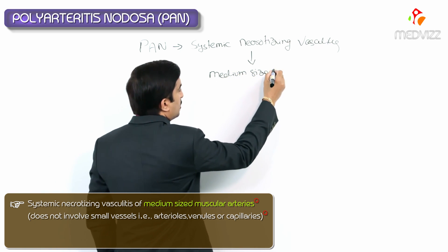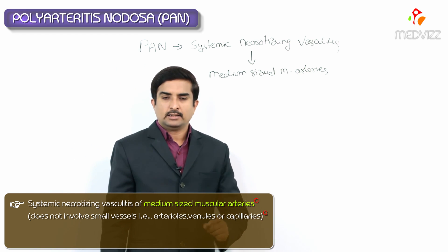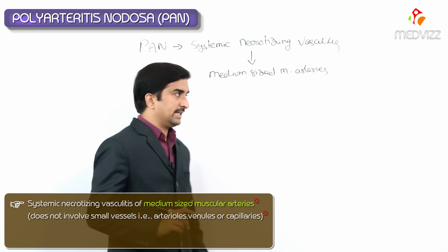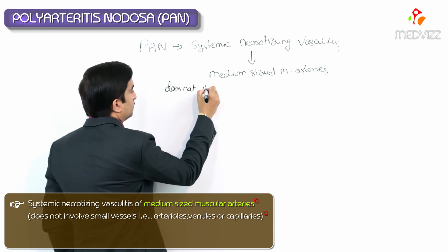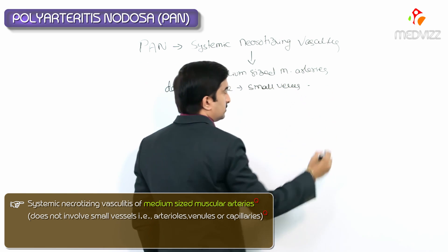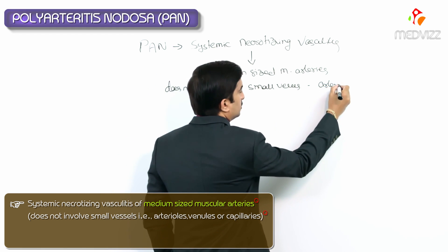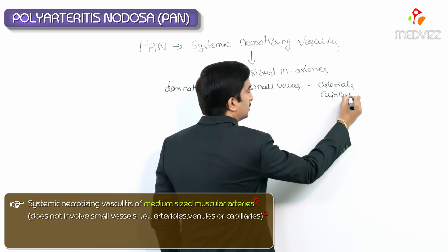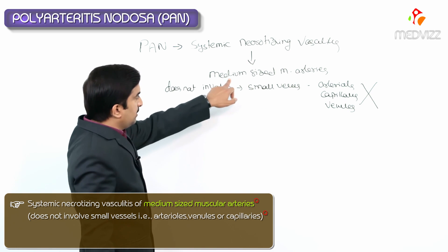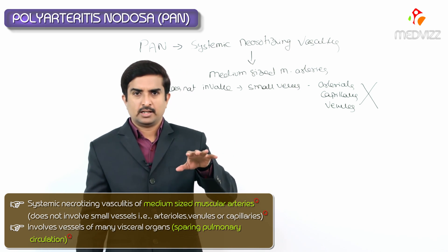An important point about PAN is that it does not involve small vessels like arterioles, capillaries, and venules. This is frequently asked in exams. PAN typically involves the vessels of many visceral organs.